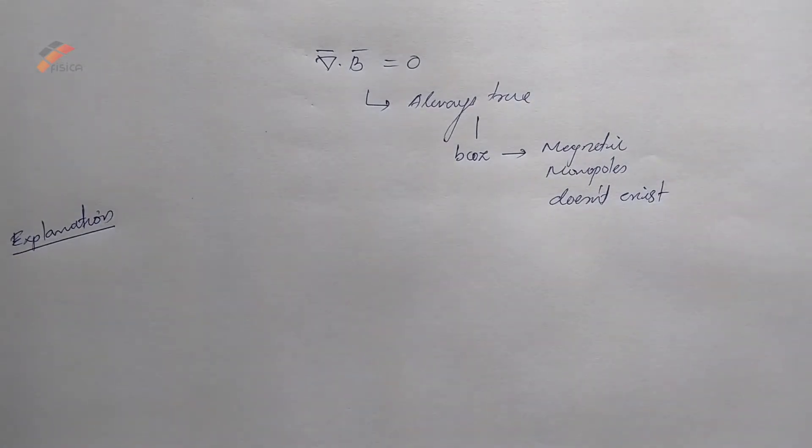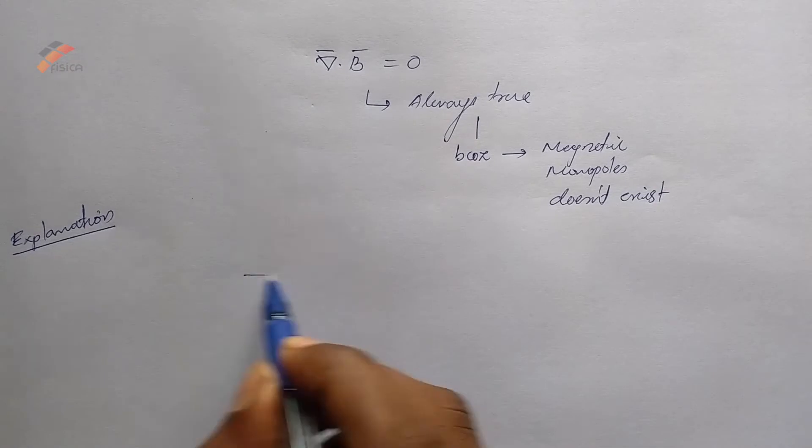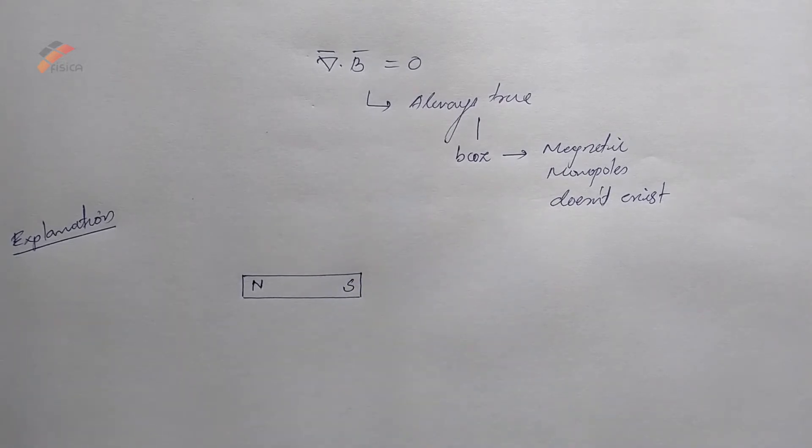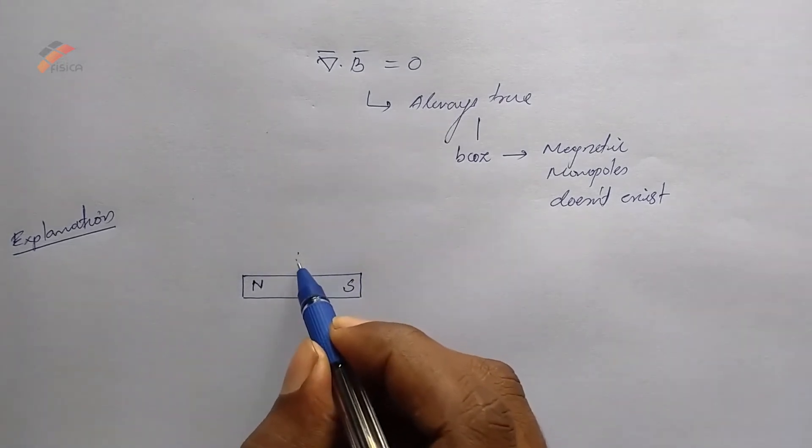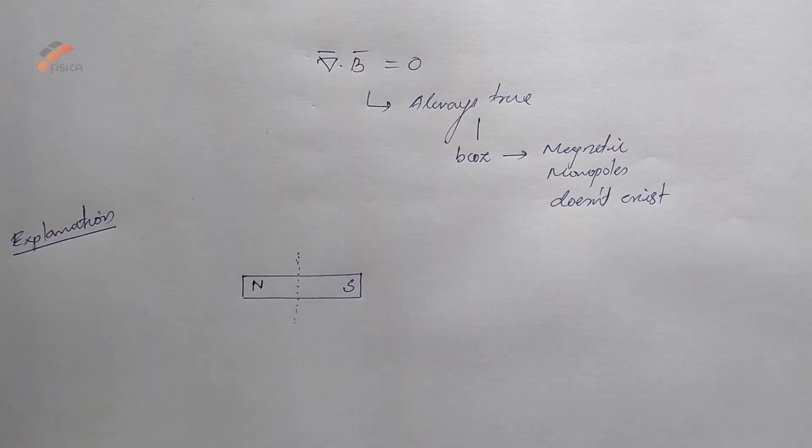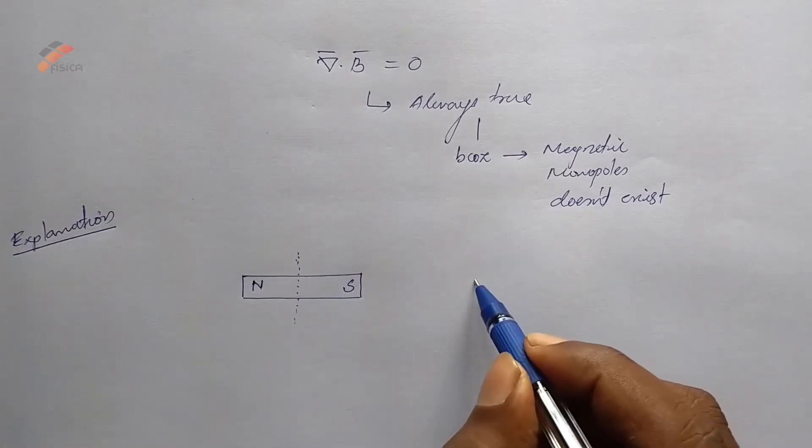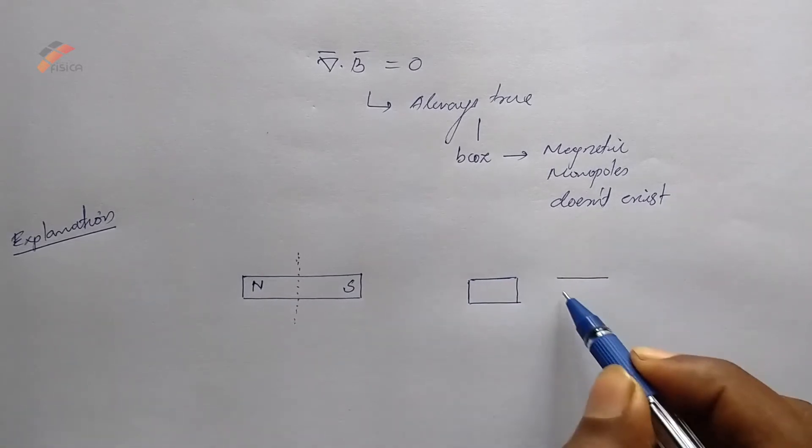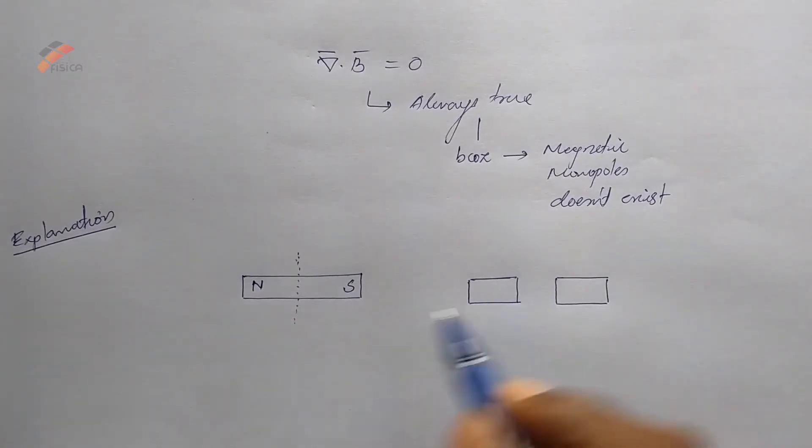It have two parts, one is north and one is south pole. I'm cutting this magnet into two pieces, then what happens? Now I'm cutting into two pieces and I got two pieces.